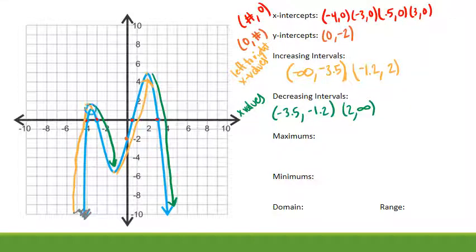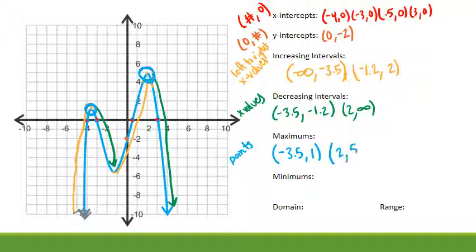Maximums. Maximums are the tops of our curves. Where we change direction is our maximums and minimums as well. We write these as points. So our maximum here looks to be at negative 3.5 up to looks like probably one would be my y value. And then I also have a point at two comma five.